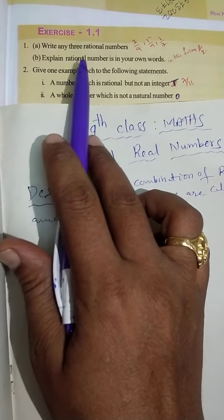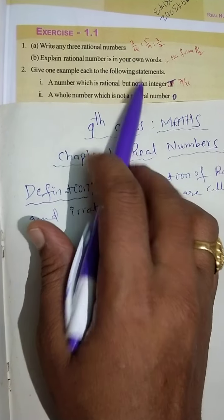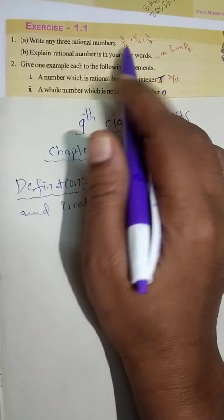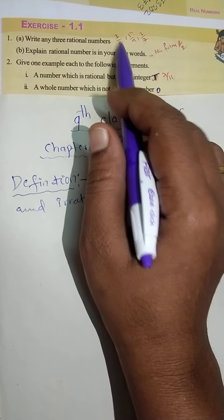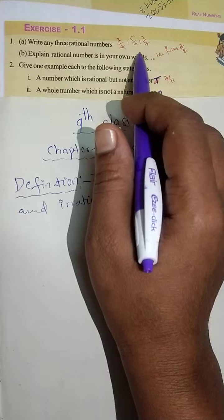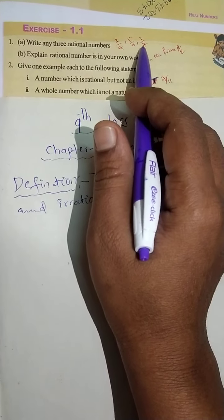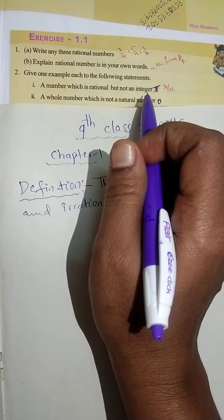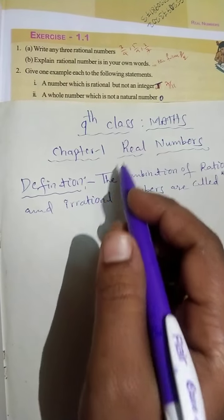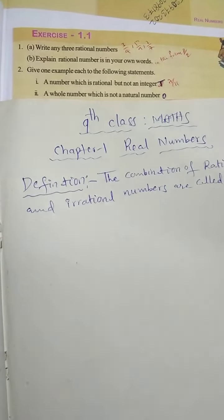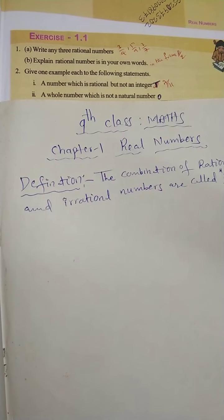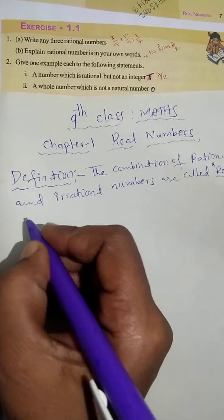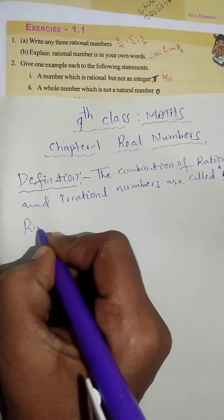First question: write any three rational numbers. It is very simple - I took here three by four, five by nine, two by seven. These are any three rational numbers. The definition of rational number: the numbers which we can express as p by q form, where p and q are integers and q is not equal to zero.